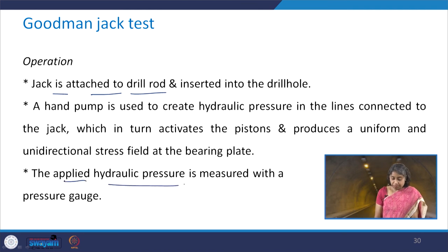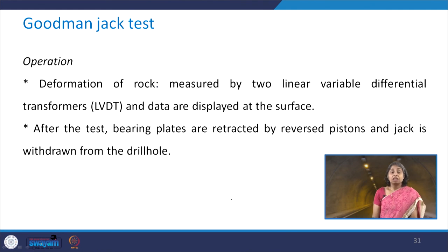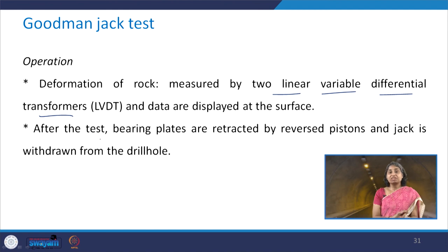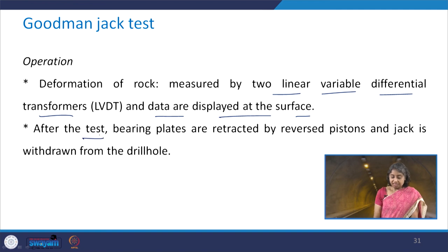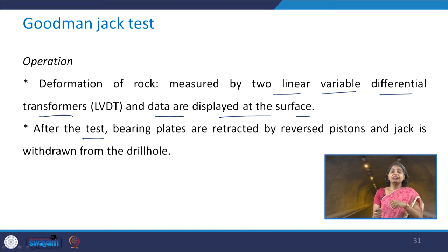The applied hydraulic pressure is measured with the help of a pressure gauge. The deformation of the rock is measured by two LVDTs, and this data is displayed at the surface. After the test, the bearing plates are retracted by the reverse action of the piston, and then the complete jack is withdrawn from the drill hole.